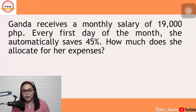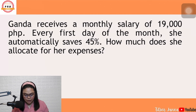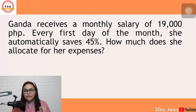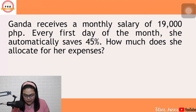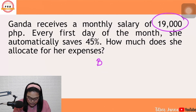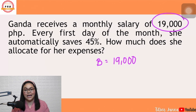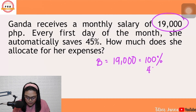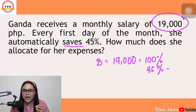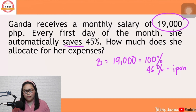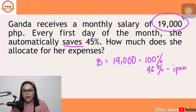Syempre, pwede rin itong gamitin sa problema na nag-involve ng pera. Sabi diyan, Ganda receives a monthly salary of 19,000. Every first day of the month, she automatically saves 45%. Can we consider 19,000 as the base? The answer is yes — because that's the total money Ganda has every month, so 100%. Now, 45% ang nai-save niya. Pag naglalabel kayo, you can put anything you want — save, itinabi — as long naiintindihan mo yan.